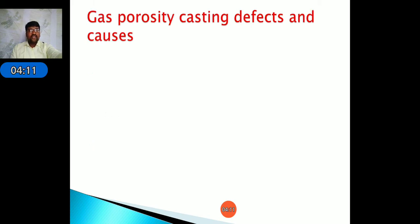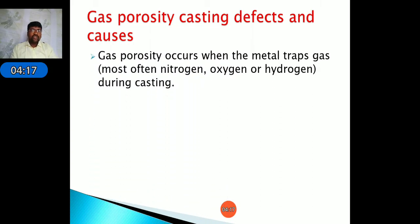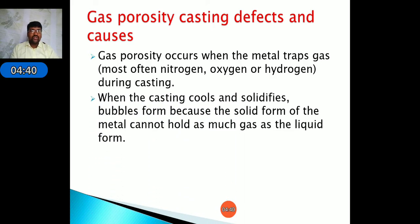Gas porosity occurs when the metal traps gas — mostly nitrogen, oxygen, and hydrogen — during the casting process. During pouring, gases escape into the mold cavity forming air bubbles, causing defects known as gas porosity. When a casting cools and solidifies, bubbles form because the solid form of metal cannot hold as much gas as the liquid form, reducing the strength of the casting object.